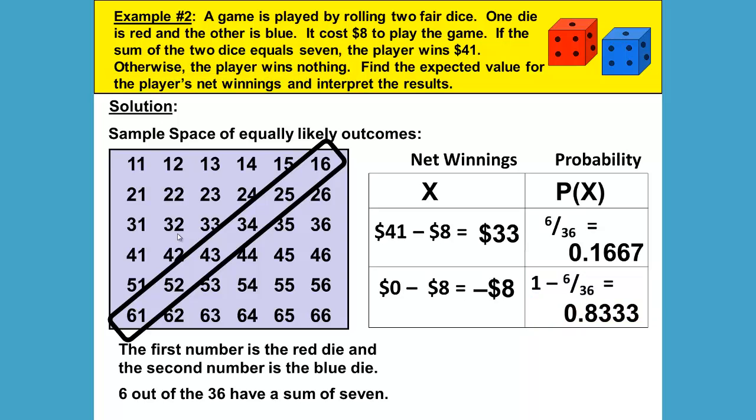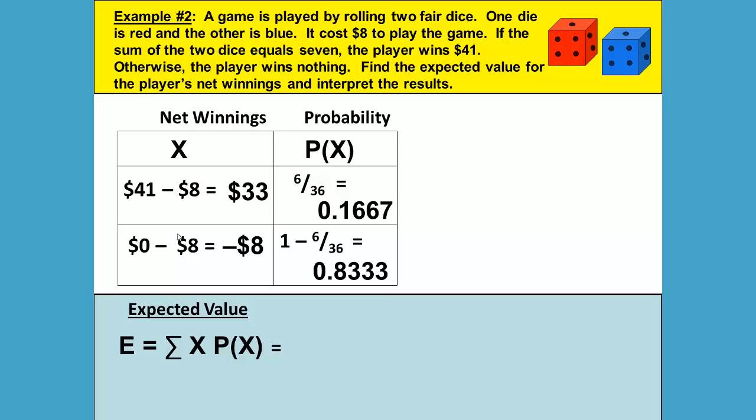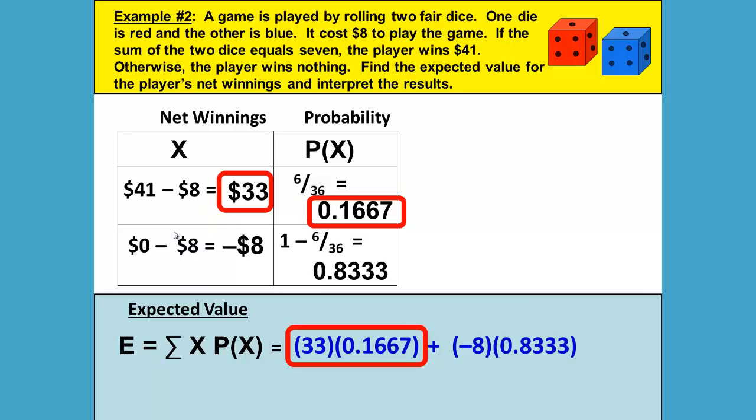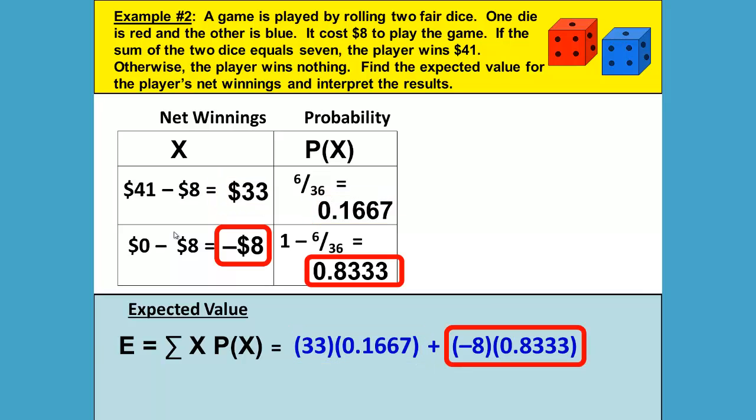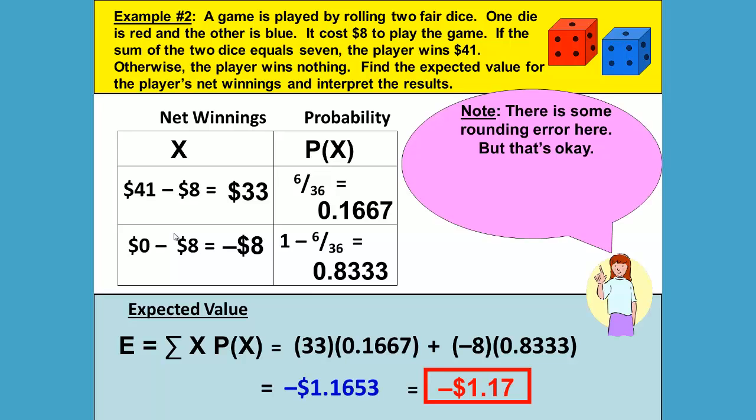This finishes our probability distribution table, and we can now find our expected value. Remember, our formula is E equals the sum of x times P(x). We can just write our numbers down: 33 times the probability of 0.1667, and negative 8 times 0.8333. Add those together and we'll get negative 1.1653. Because it's money, I will round to the nearest cent and get negative $1.17. There is some rounding error here, but the exact answer would be negative $1.16 repeating sixes.